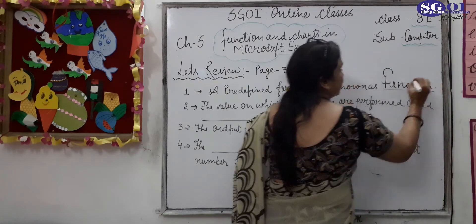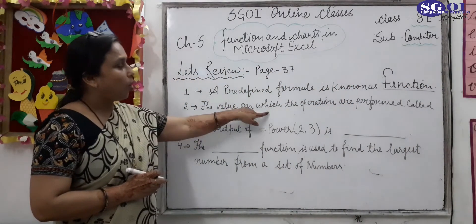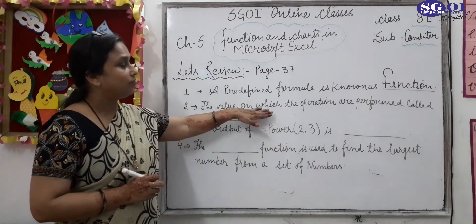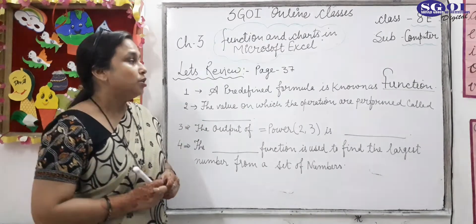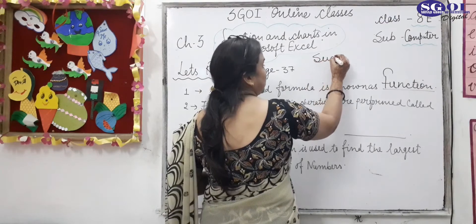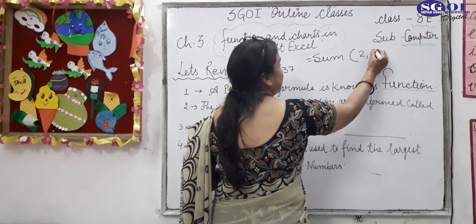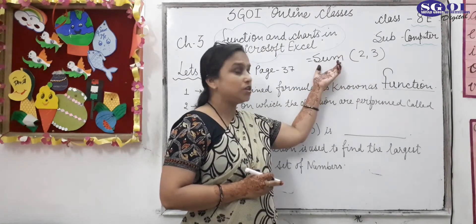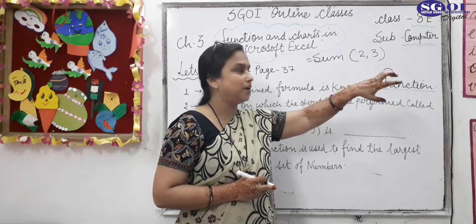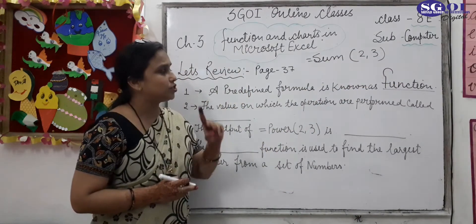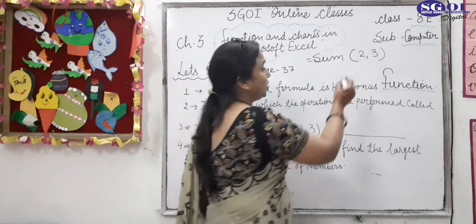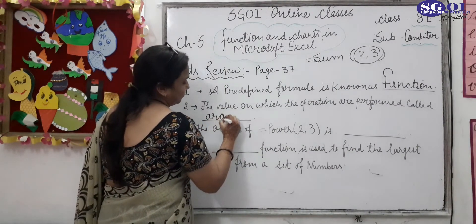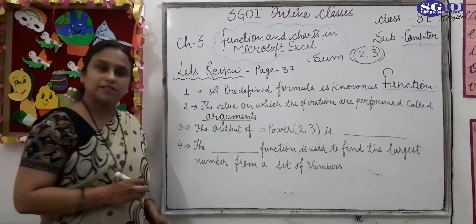Okay students. Now second: the value on which the operations are performed are called - these values are called arguments. This is called the arguments. Clear.